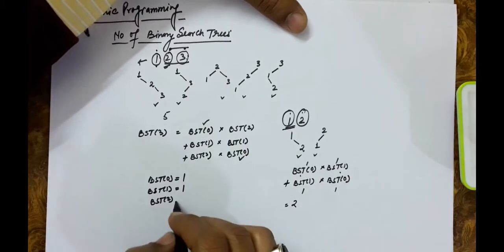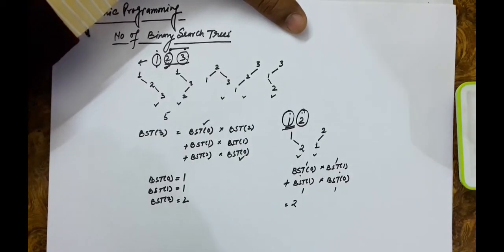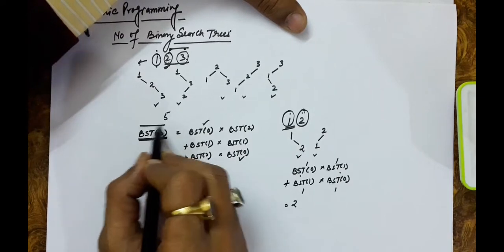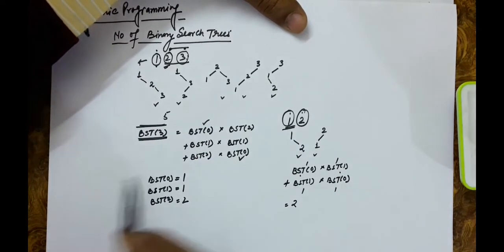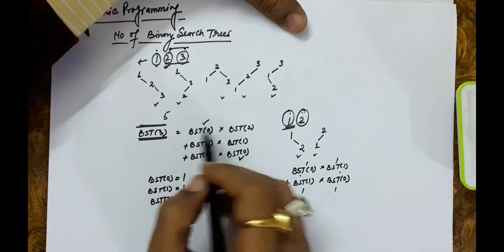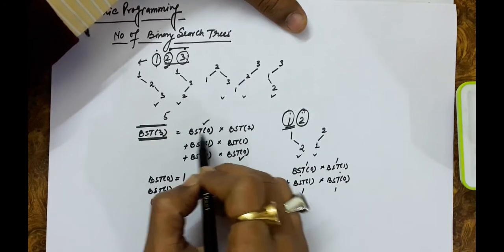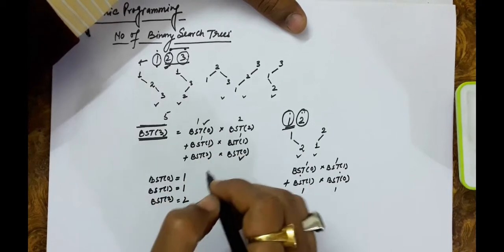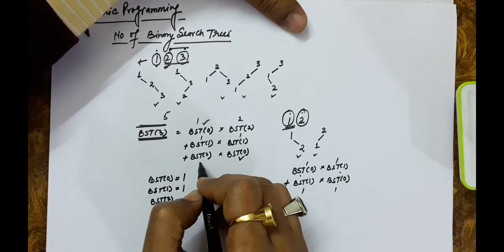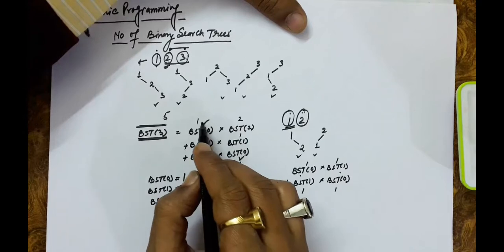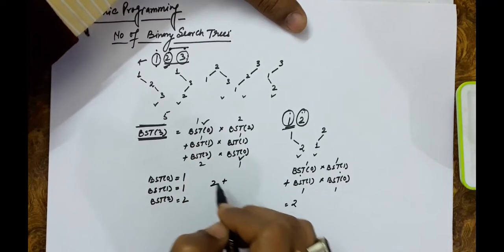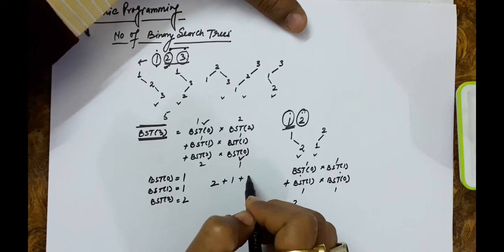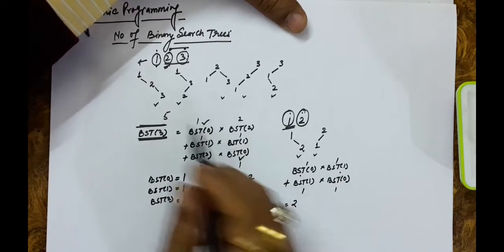Putting all values together for BST(3): BST(0)*BST(2) + BST(1)*BST(1) + BST(2)*BST(0) = 1*2 + 1*1 + 2*1 = 2 + 1 + 2 = 5. So five is the total number of trees possible with three keys.